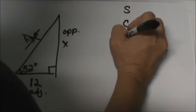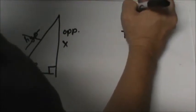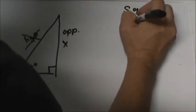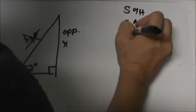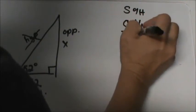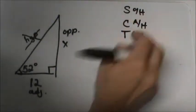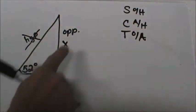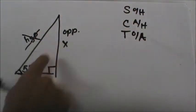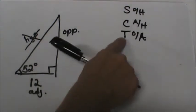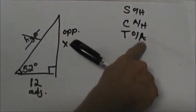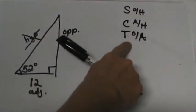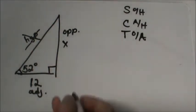So go back and look to reference which trig ratio. The trig ratios are: sine is opposite over hypotenuse, cosine is adjacent over hypotenuse, and tangent is opposite over adjacent. Which one uses the opposite side and the adjacent side? Well, that's our tangent. So that's how we decide which trig function to use.